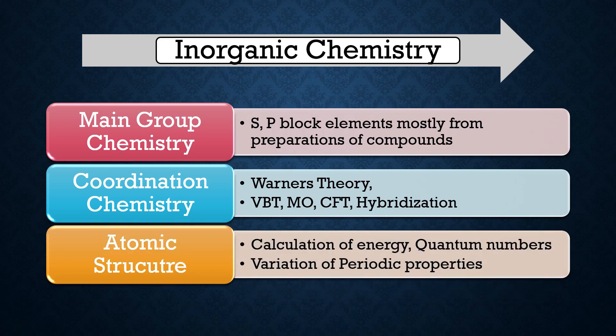In coordination chemistry, you should learn about Werner's theory, VBT, MO theory, CFT, and hybridization of various complexes. For atomic structure, you must learn about quantum number calculations of energy, because NALCO is continuously asking questions regarding quantum numbers. This video is also available on the YouTube channel 'Kashan Sastri.' Next is periodic variation — properties like electronegativity, ionization energy, and electron gain enthalpy, and their variations along the group and period.